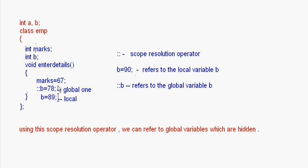This way we can have global and local variables with the same name. If the names are different, there's no issue. But if the names are the same, the global variable is hidden by the local one, and to assign a value to the global one we use the scope resolution operator.